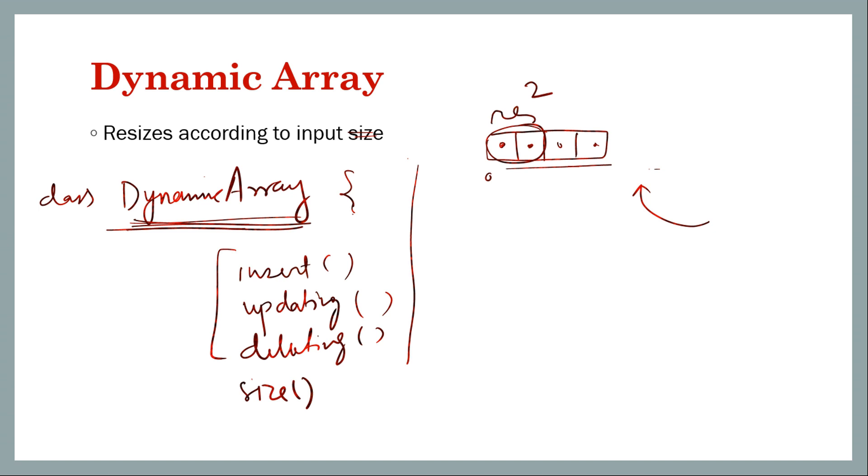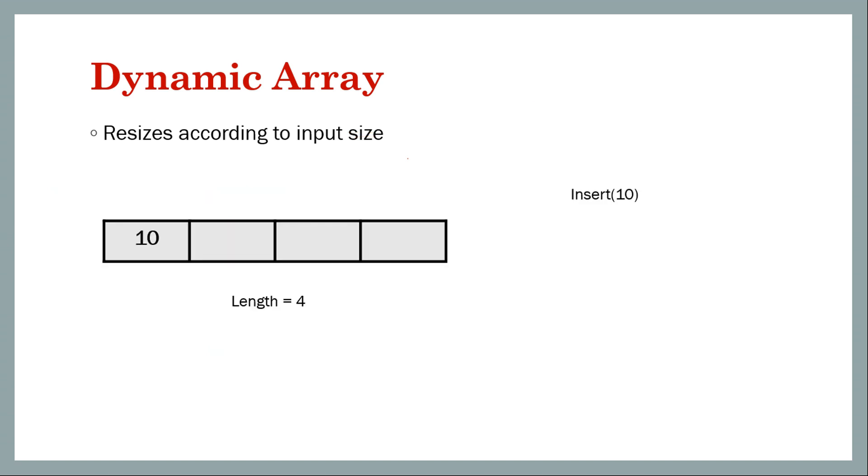So let's see this operation and how this will behave. Let's say we started with a length of four. Inserting 10 is fine, and at this point of time size will be one. Then let's say the same elements: insert 20, 30, 40, it's fine. The length is four and now the size is also four. We have inserted four elements.